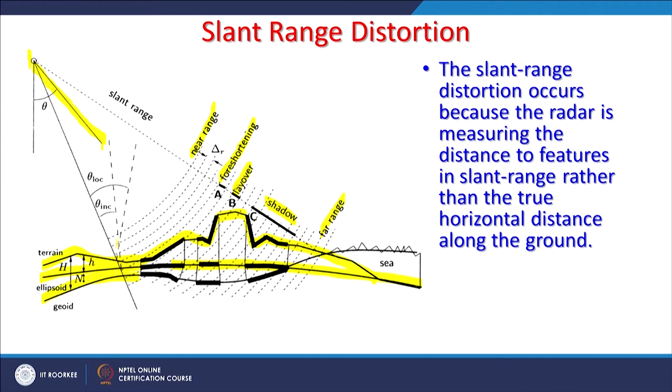Slant range distortions occur because the radar is measuring the distance to a feature or ground object in slant range rather than the true horizontal distance along the ground — it is measuring neither vertical nor horizontal distance, but the slant range distance. The result of slant range distortion varies with image scale, especially moving from near to far range or from center to the margins of the dataset.